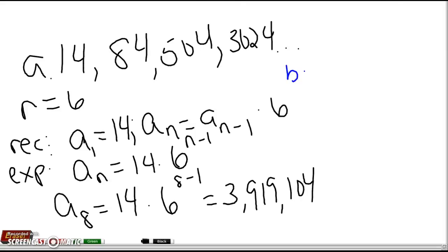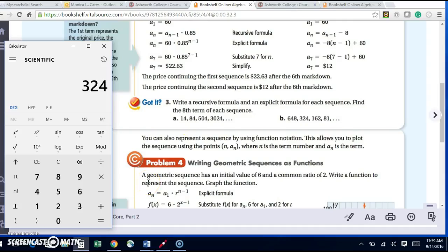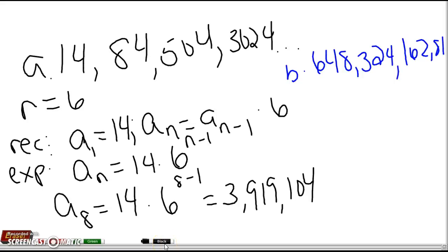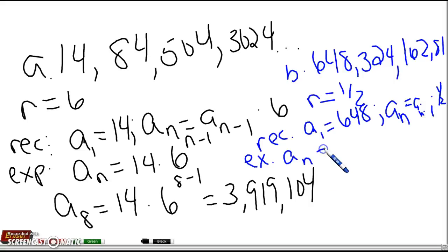Let's do part B. I have 648, 324, 162, 81. When I divide consecutive terms — 324 divided by 648 gives me 0.5, or one half; 162 divided by 324 gives me 0.5; 81 divided by 162 gives me 0.5. So this is a geometric sequence with R equals one half. My recursive formula: a sub 1 equals 648, and a sub n equals a sub n minus 1 times one half. My explicit formula: a sub n equals 648 times one half to the n minus 1.